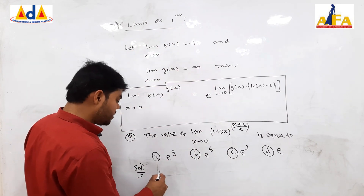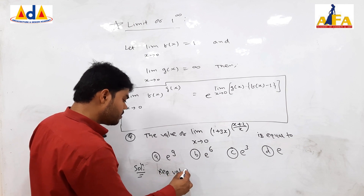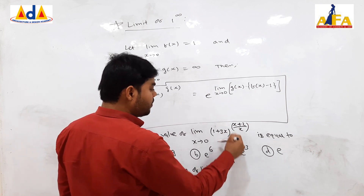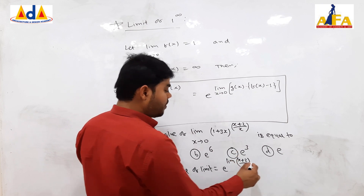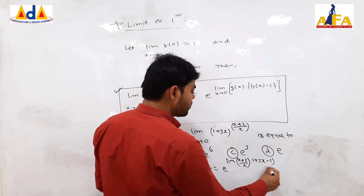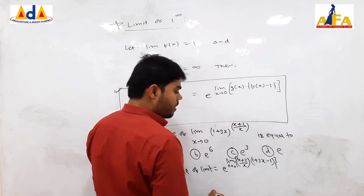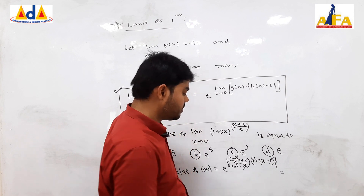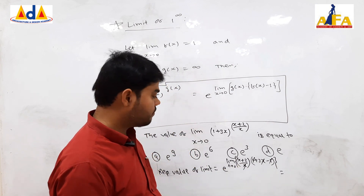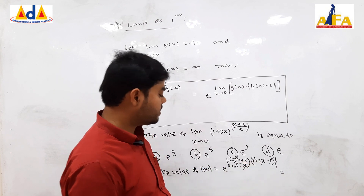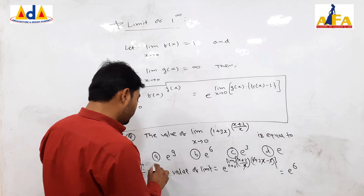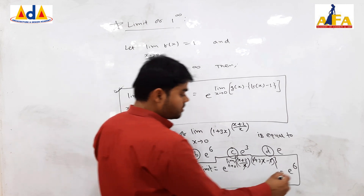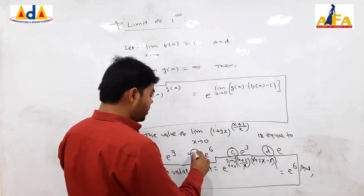Directly applying the formula: the required value of the limit equals e to the power of limit of g(x), that is (x + 2)/x, into (f(x) minus 1), that is (1 + 3x minus 1), as x tends to 0. Solving: the 1 and 1 cancel, and x and x cancel. Putting x equal to 0 we get 2 into 3, that is 6. So the answer is e to the power 6. This corresponds to option B.